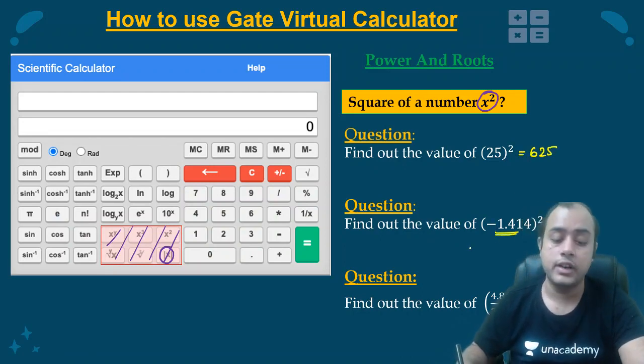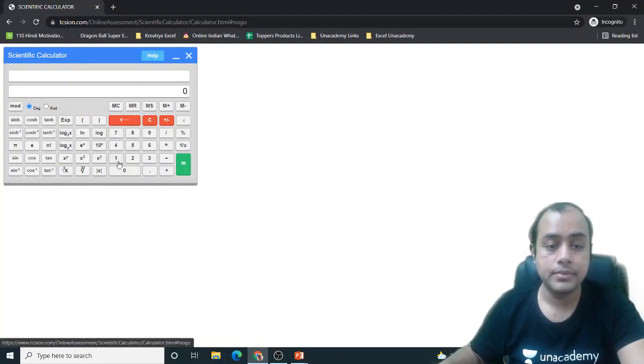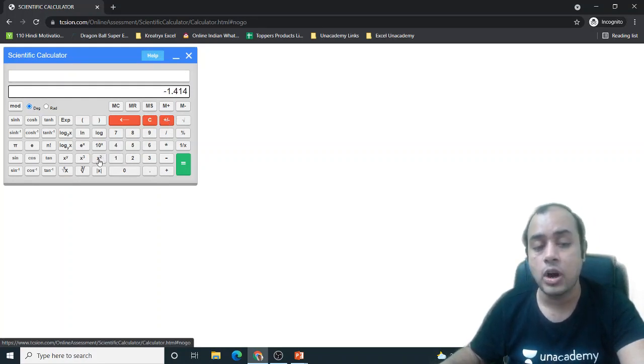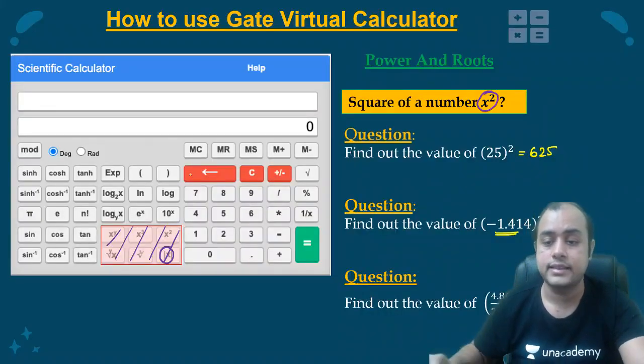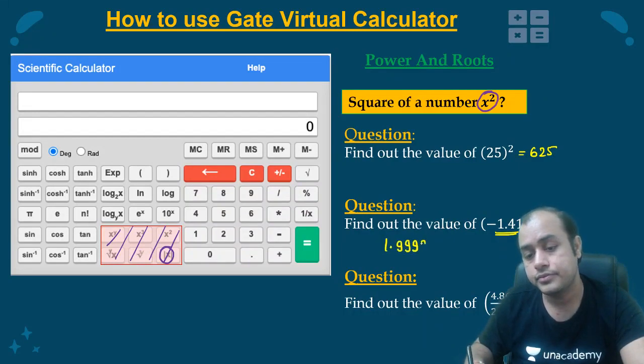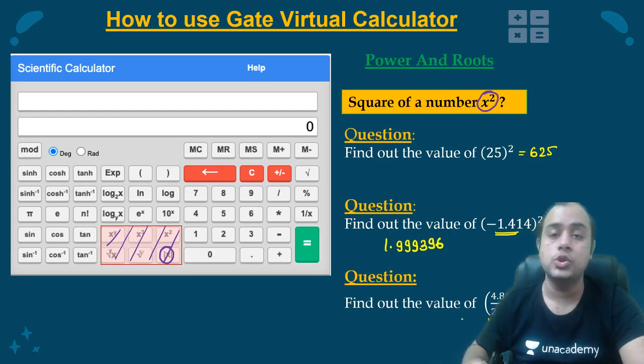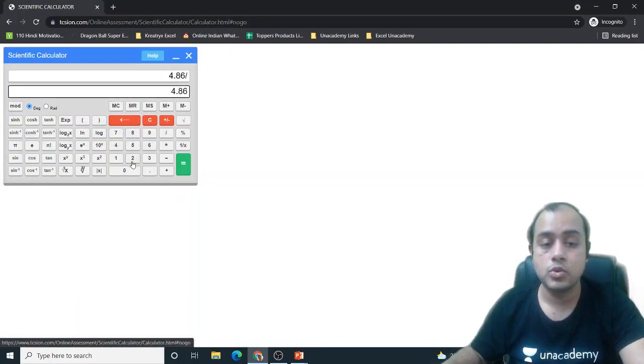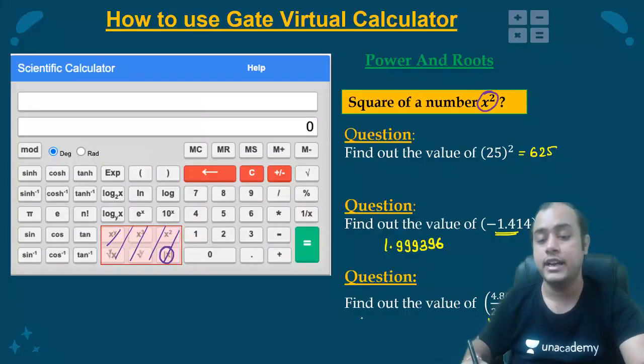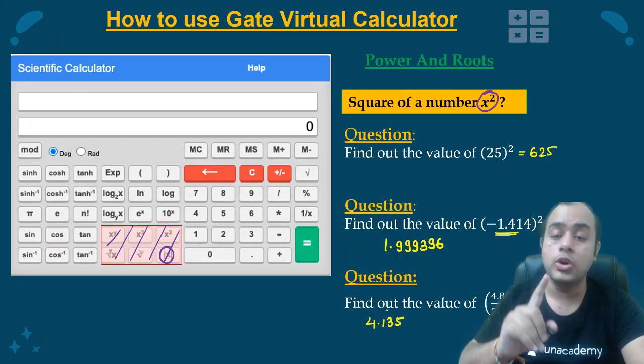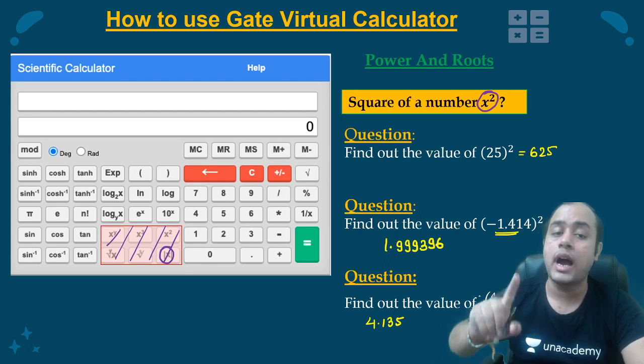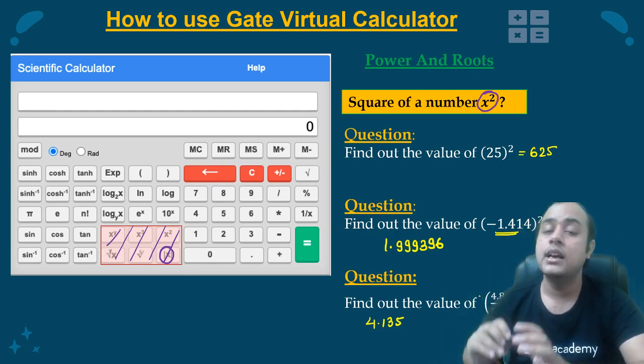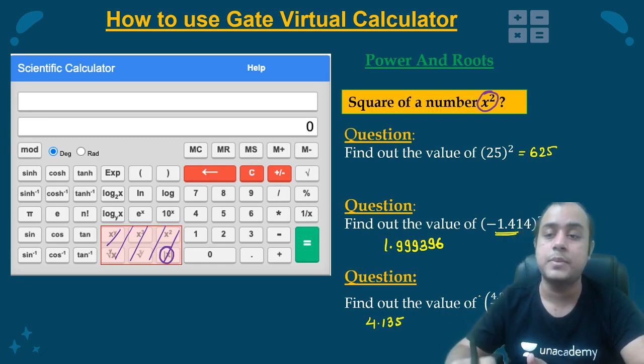Then minus 1.414 square. So I will clear it. 1.414, I will press this plus minus key to make it minus. Then I will click on X square, 1.999396, near to 2. Next is we have to take the square of a ratio 4.86 by 2.39. I will press equal to and then only you press square, 4.135. Don't press square without pressing equal to, otherwise it will take the square of the latest entry that is 2.39. But we want the square of the complete ratio 4.86 by 2.39.